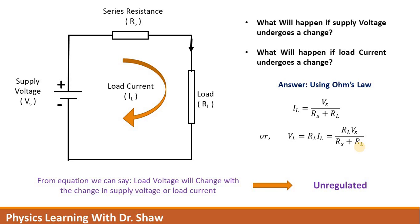But sometimes it is not desirable that the load voltage or output voltage will change with the change in line voltage. If this kind of scenario happens — that is, output voltage changes with the change in supply voltage or load current — such a supply is called an unregulated power supply.